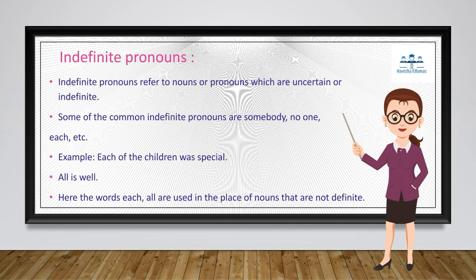Indefinite pronouns refer to nouns or pronouns which are uncertain or indefinite. Some common indefinite pronouns are: somebody, no one, each, etc. For example: 'Each of the children was special.' 'All is well.' Here, 'each' and 'all' are used in the place of nouns that are not definite — the noun is indefinite, so we use indefinite pronouns to refer to it.